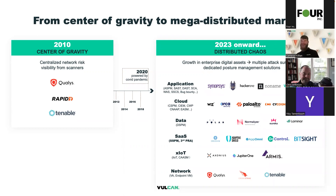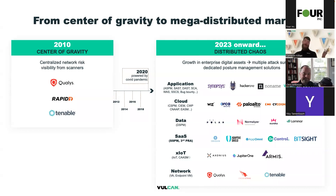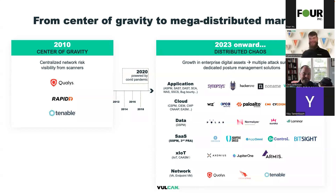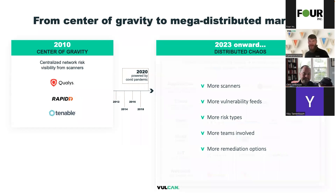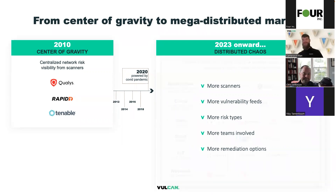It seems like a new company is coming out of the woodwork every day — Snyk, Aqua, BitSight, Palo Alto, Orca, Wiz — coming out of every which way. Some of them scan code, some scan the cloud, some scan hosts, some scan websites. It's a very confusing field to deal with. To summarize: in 2023, we have more scanners, more vulnerability fields, more risk types, more teams involved, and a lot more remediation options at our fingertips.